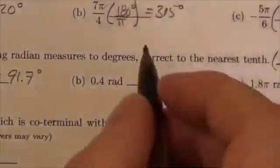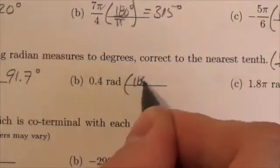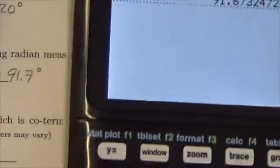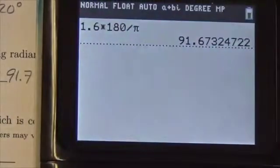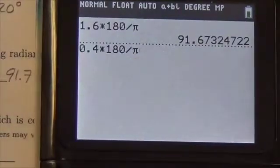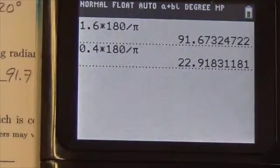The next one, again we're going to multiply by 180 degrees over π. So here we go, 0.4 times 180 divided by π, 22.9.